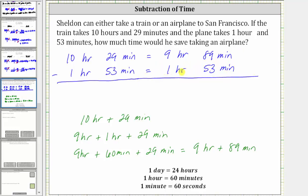Now it's in a form where we can determine the difference. 89 minutes minus 53 minutes is 36 minutes. And nine hours minus one hour is equal to eight hours. Now we know Sheldon can save eight hours and 36 minutes by taking an airplane.